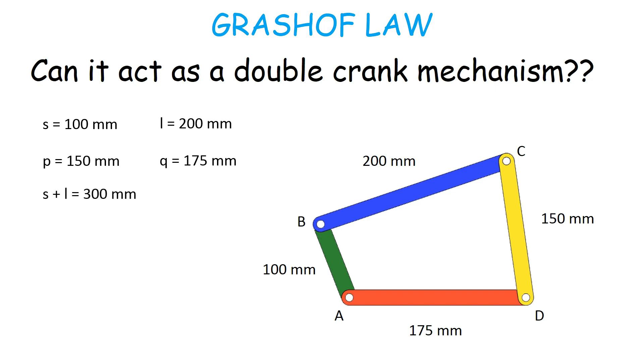Therefore, the sum of the lengths of the shortest and the largest link equals 300 mm and the sum of the lengths of the other two links equals 325 mm.